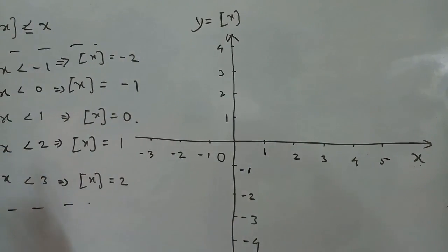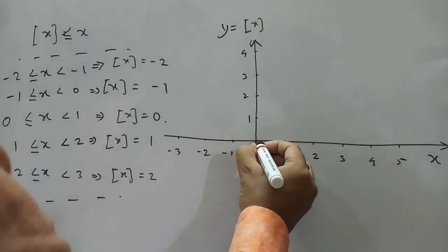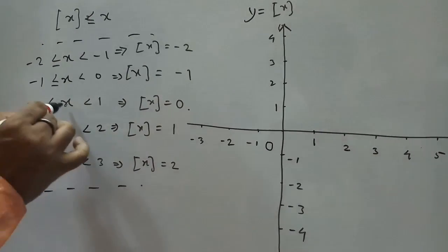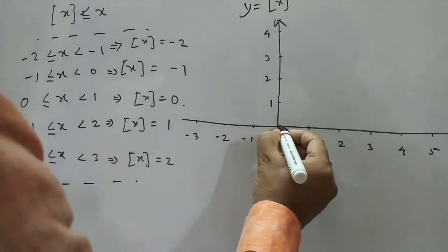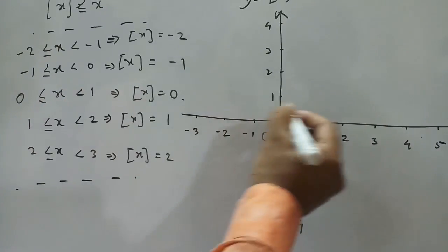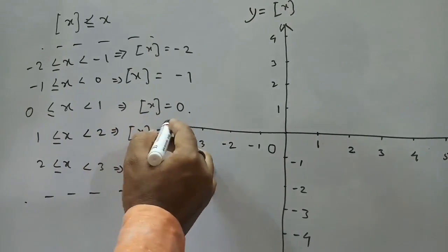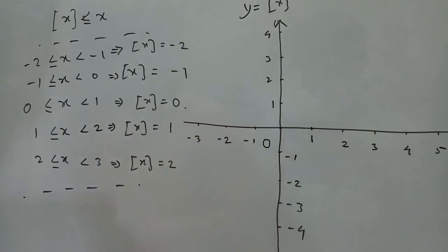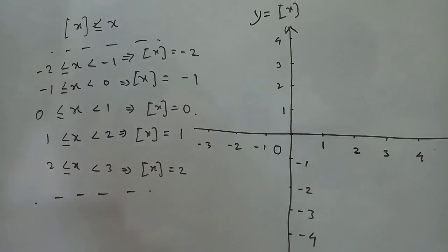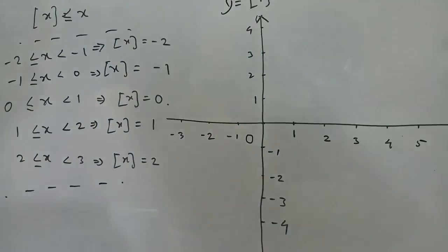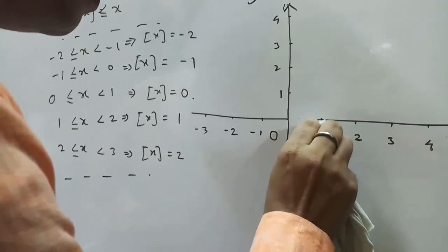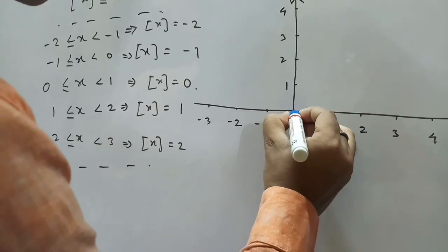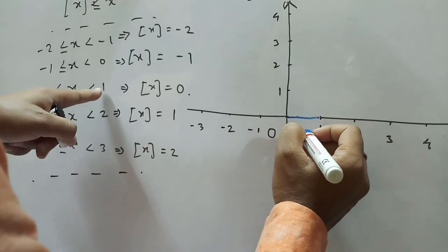When the value of X lies between 0 and 1, X may equal 0 but X cannot equal 1 — the interval is closed at 0 and open at 1. Therefore the value of Box[X] is 0, giving a horizontal line on the X-axis from 0 to 1, closed at 0 and open at 1.